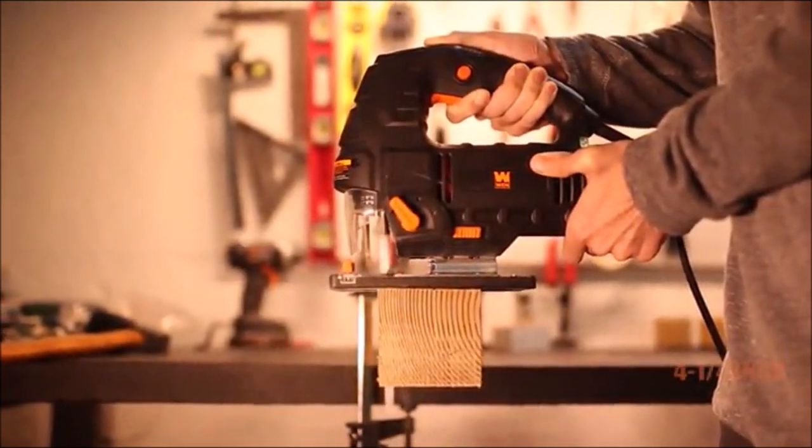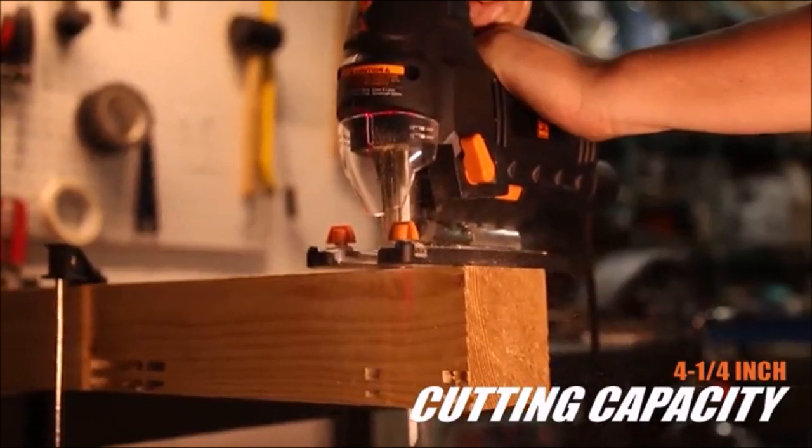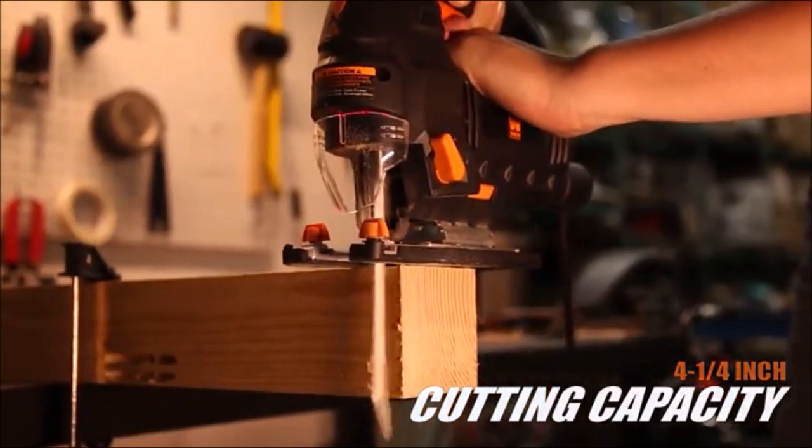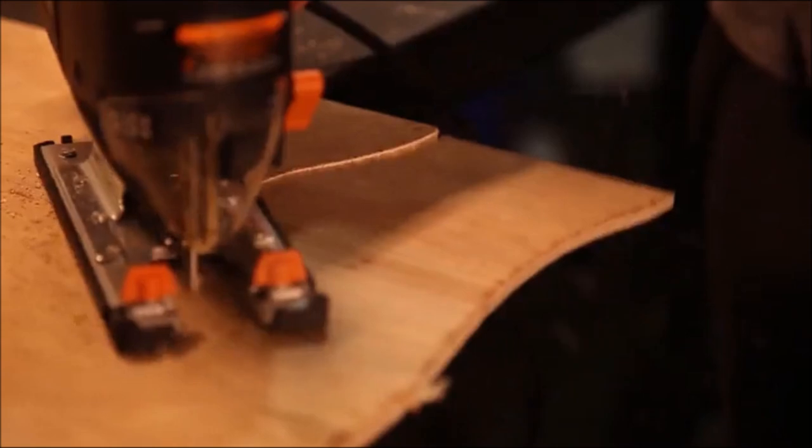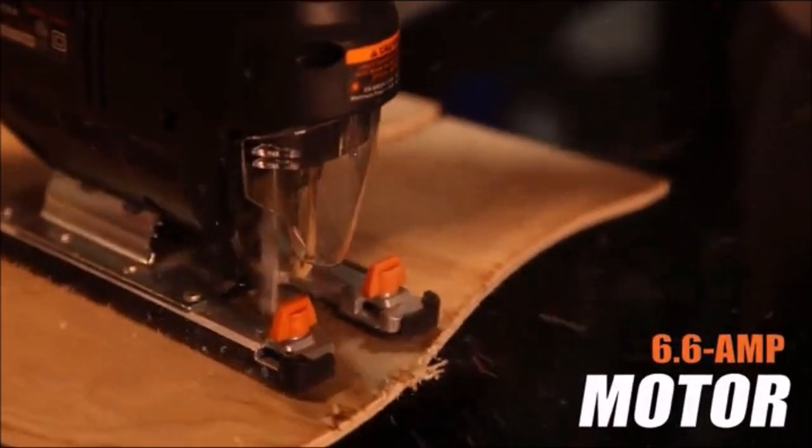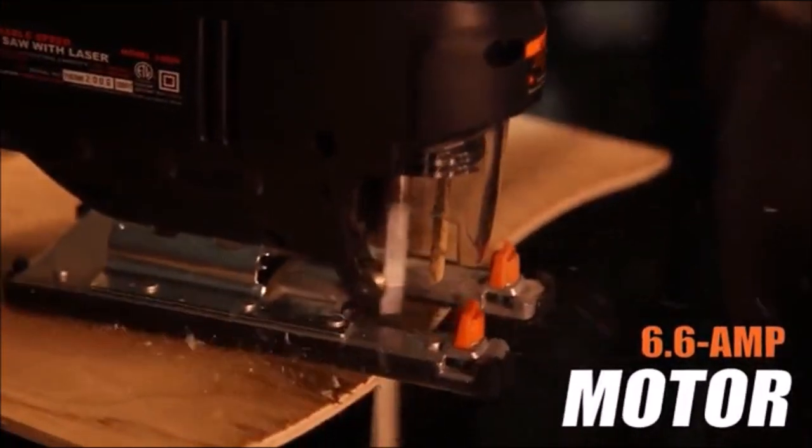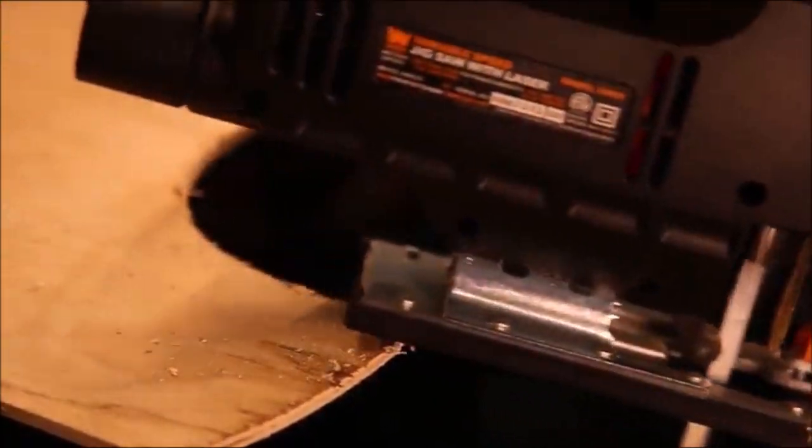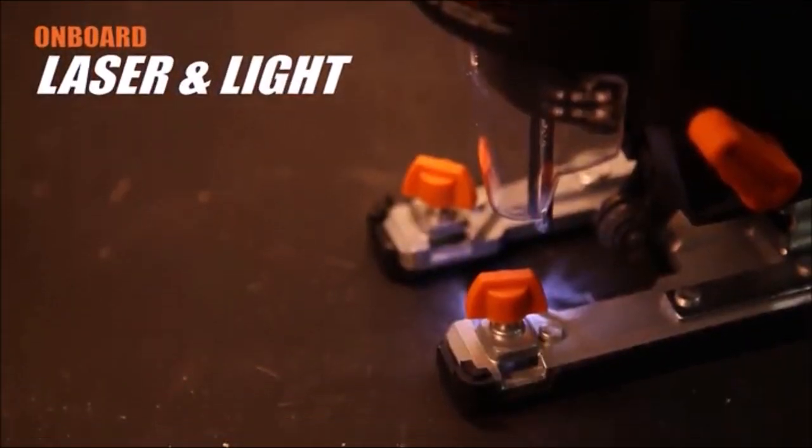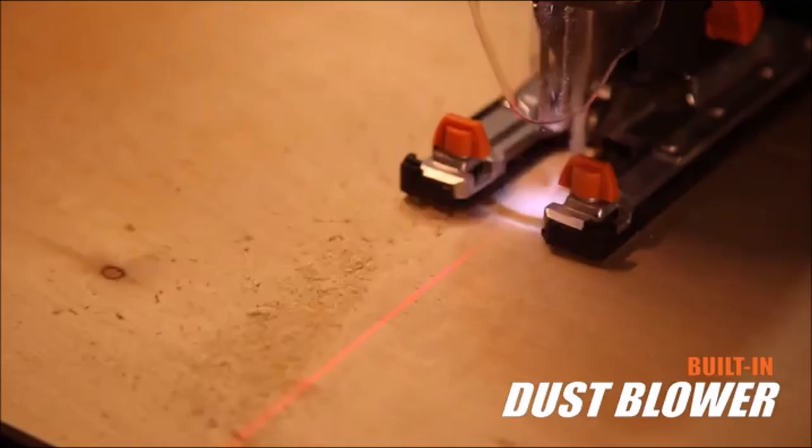The variable speed dial adjusts the stroke of the blade anywhere from zero to 3,300 strokes per minute. The onboard laser keeps your line of cut right on target, while the front-mounted LED light helps illuminate your workpiece. It tackles wood up to 4 1/4 inches thick and metals up to 3/8 of an inch thick.